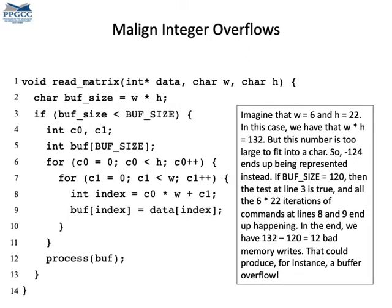It seems that the program is safe due to the test at line 3, right here. However, if w times h is a big value, then it will not fit into the result. Both sides might end up as a very small number, even though w and h are not small, and then we pass the check at line 3. But the loops at lines 6 and 7 will read w times h positions of array data anyway, and some of these readings can be invalid.